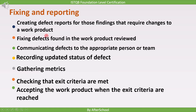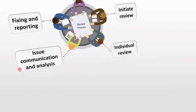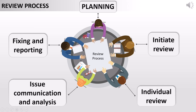So these were the different tasks under the fixing and reporting stage: creating defect reports, fixing defects, communicating defects to the appropriate person or team, recording updated status, gathering metrics, checking exit criteria, and accepting the work product when exit criteria are reached. Before we end this lecture, remember the five activities of the review process: planning, initiate review, individual review, issue communication and analysis, and fixing and reporting.